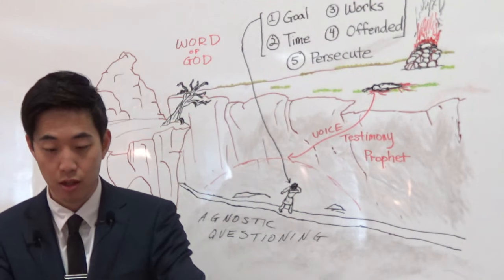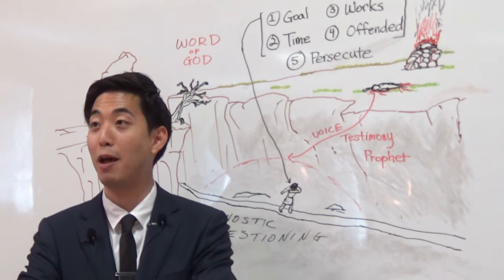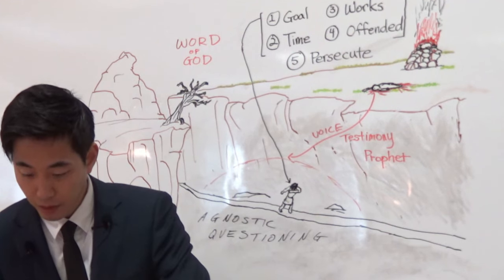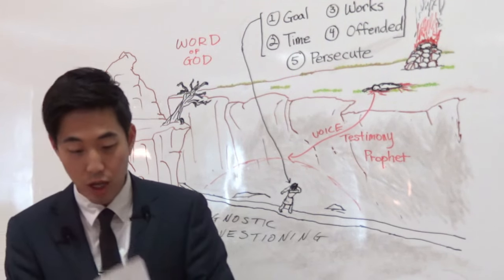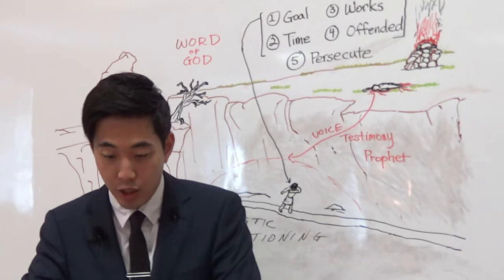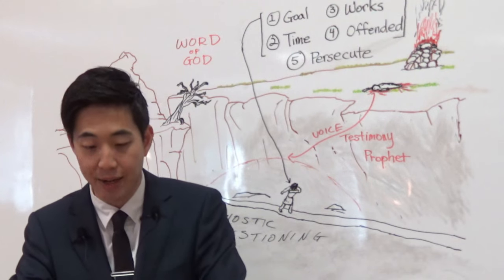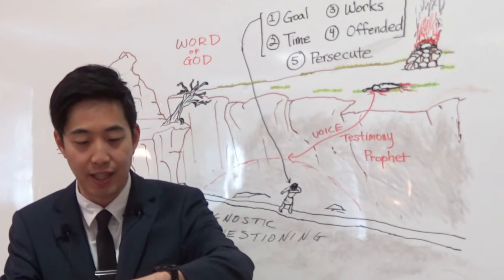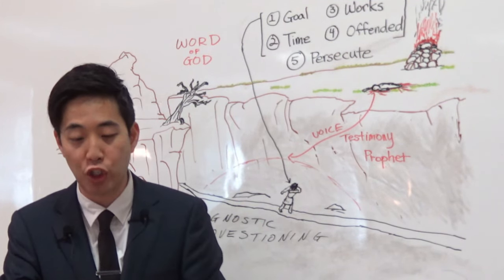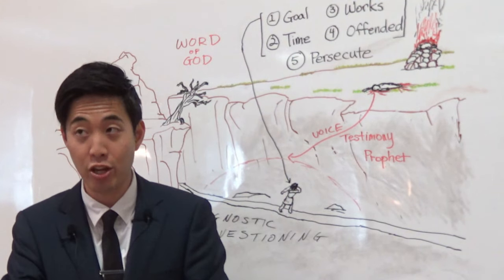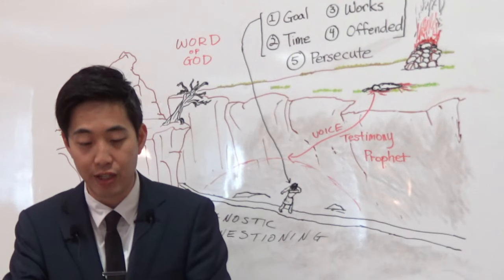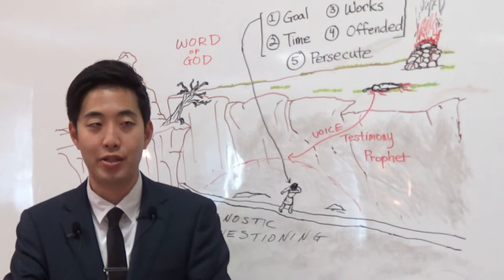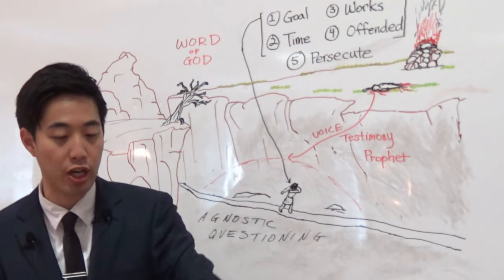Luke chapter 11. Notice what the Lord Jesus Christ accuses the Pharisees when we look at verse 49. Therefore also said the wisdom of God, I will send them prophets, and apostles, and some of them, they shall slay and persecute. That the blood of all the prophets. Who's the blood of all the prophets? Verse 51. From the blood of Abel. Unto the blood of Zacharias. Returning to Genesis 4.